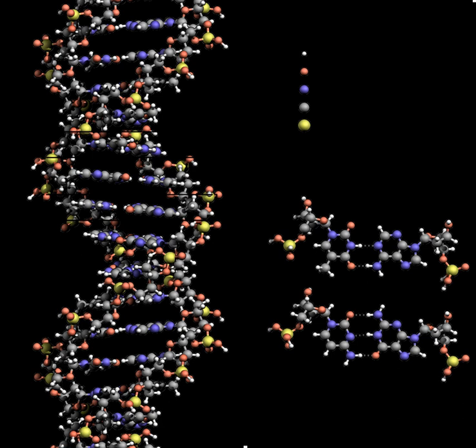The two DNA strands are also known as polynucleotides, as they are composed of simpler monomeric units called nucleotides. Each nucleotide is composed of one of four nitrogen-containing nucleobases — cytosine (C), guanine (G), adenine (A), or thymine (T) — a sugar called deoxyribose, and a phosphate group.